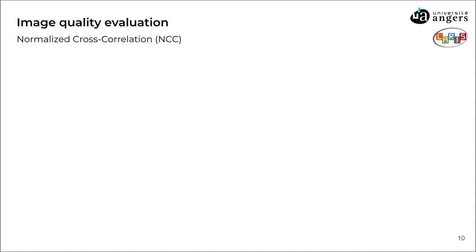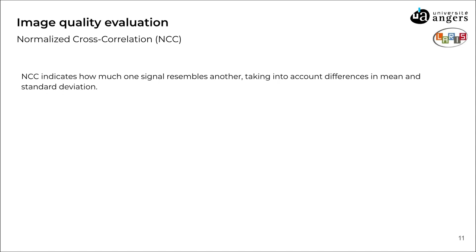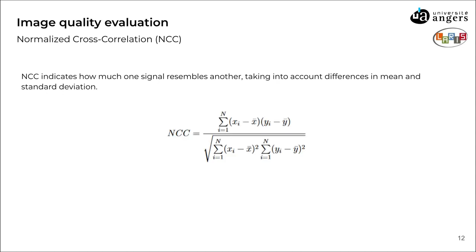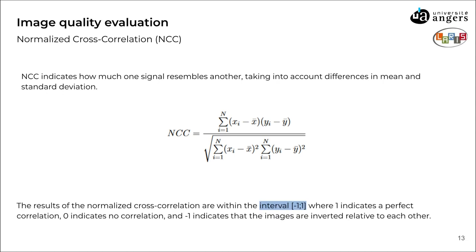The last metric is the NCC. It measures the similarity between two signals or two images by computing the normalized cross-correlation coefficient, which indicates how much one signal resembles another, taking into account differences in mean and standard deviation. It can be calculated using this formula, and the results of the normalized cross-correlation are within the interval [-1, 1], where 1 indicates a perfect correlation, 0 indicates no correlation, and -1 indicates that the images are inverted relative to each other.